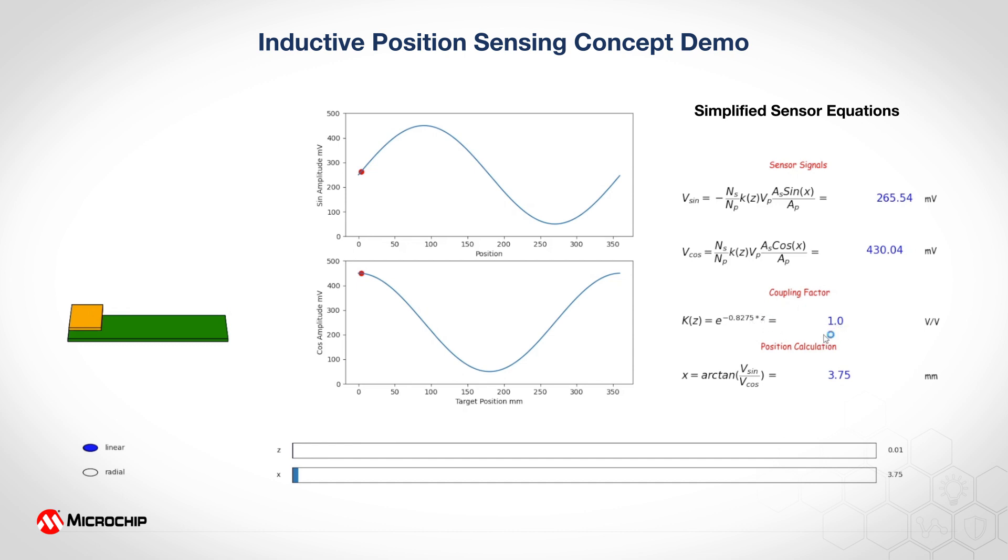And finally, the position calculation is done through a basic arctan function of the ratio between the sinusoids. And this is done through, first of all, it's important to realize that in order to accurately calculate the position, we need...